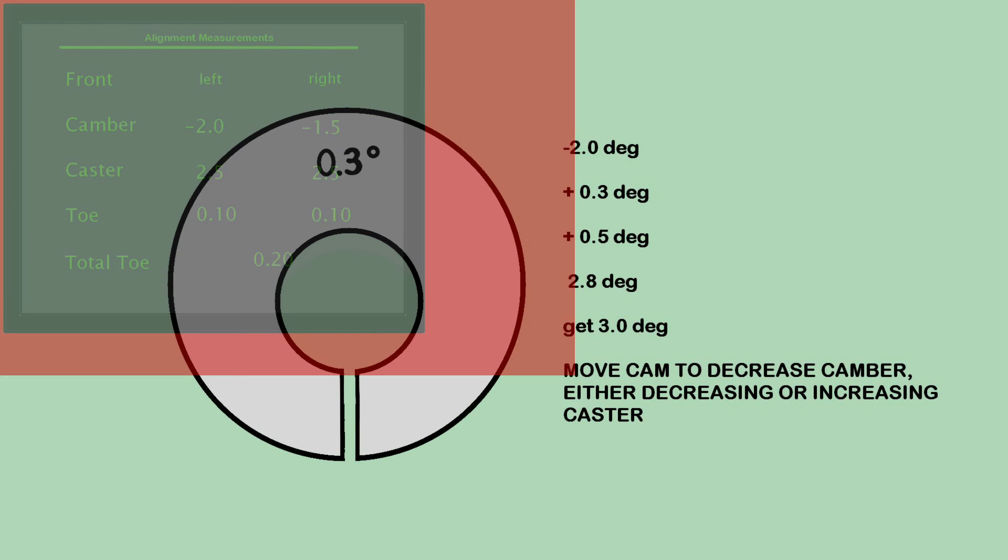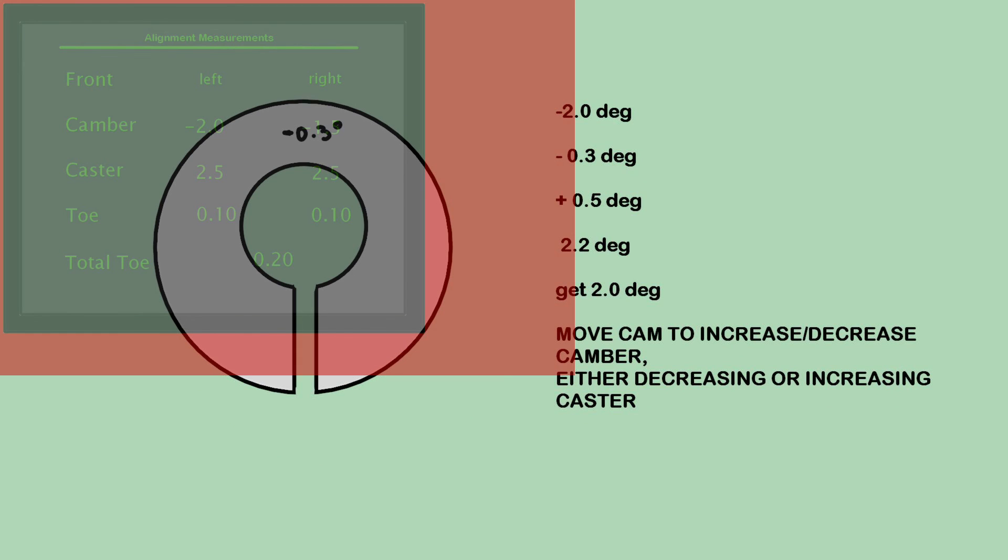But if the cam is more than zero, then note the position, and depending if it's facing towards the inside or outside, you then add or subtract that amount to the original reading, plus 0.5 degree.